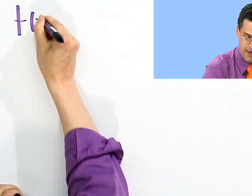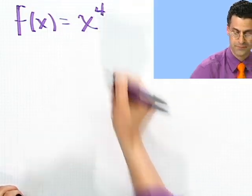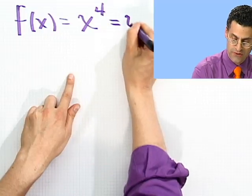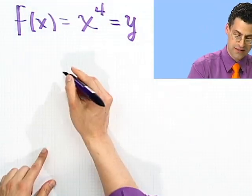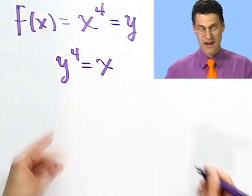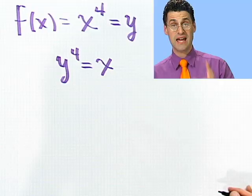Suppose you were given f(x) = x^4. Well, you could just think of that as being y equals that, flipping the roles of x and y. So you're saying y^4 = x. And now you want to solve that. That would require you to take the fourth root of both sides.